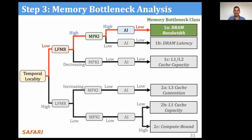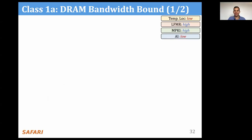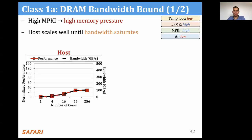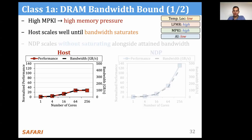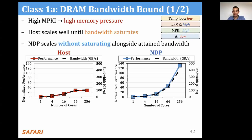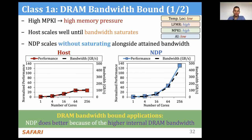We highlight how we apply our scalability analysis for DRAM bandwidth-bound applications. These applications have low temporal locality, high last-level cache miss ratio, high MPKI, and low arithmetic intensity. Since they have high MPKI, they exert high memory pressure on the memory subsystem. We expect these applications to require high memory bandwidth. As we observe in the plot, the host performance scales well until the bandwidth saturates at 64 cores. On the other hand, the NDP system scales better without saturating, taking advantage of the high memory bandwidth device. Therefore, for DRAM bandwidth-bound applications, the NDP system performs better than the host system because it can take advantage of the internal DRAM bandwidth available inside the DRAM device.